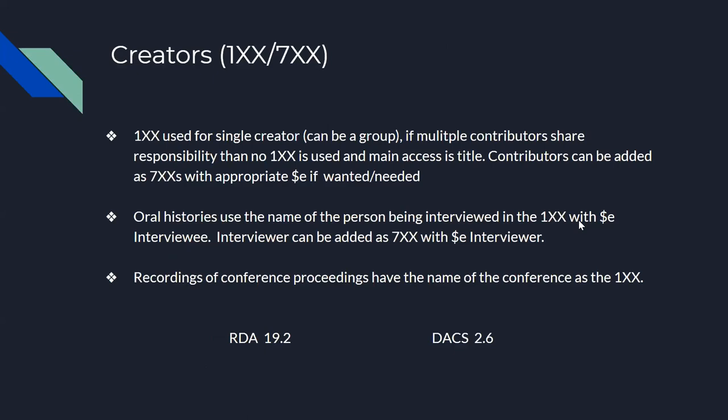Continuing down the MARC record, we move to the creator in the 1xx field. The 1xx field can be used for a single creator of a single work, or if they are the main creator for a compilation of works. However, if there are multiple contributors to an expression, the 1xx field is not used, and the main access becomes the title. The contributors can then be added in the appropriate 7xx field with the corresponding relator term.